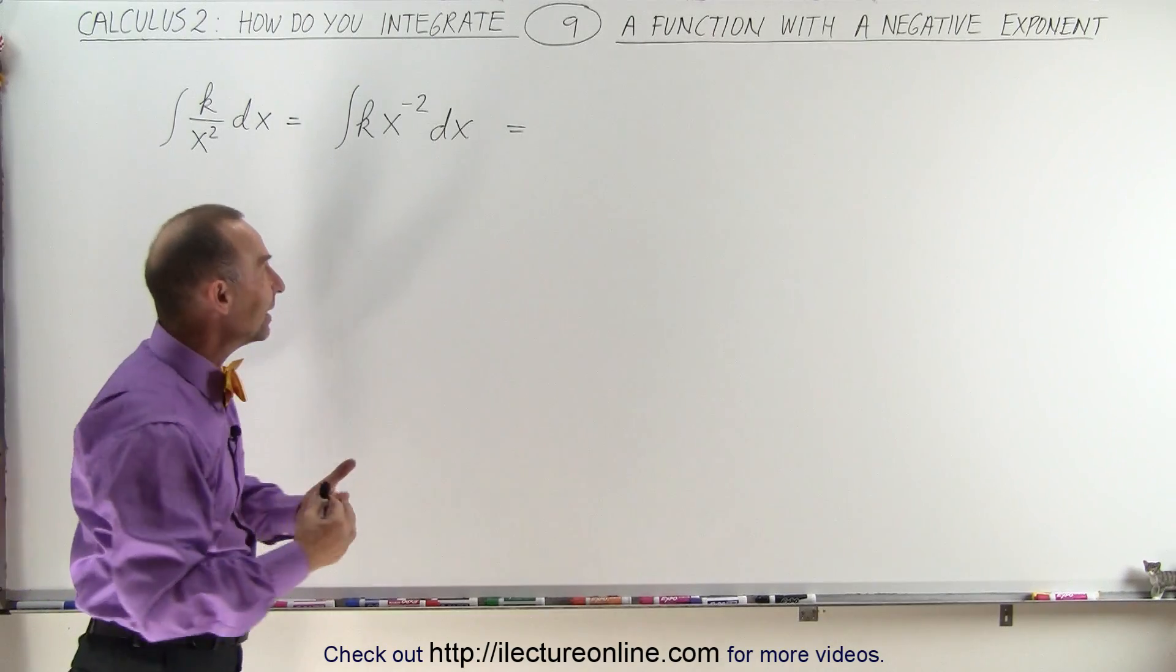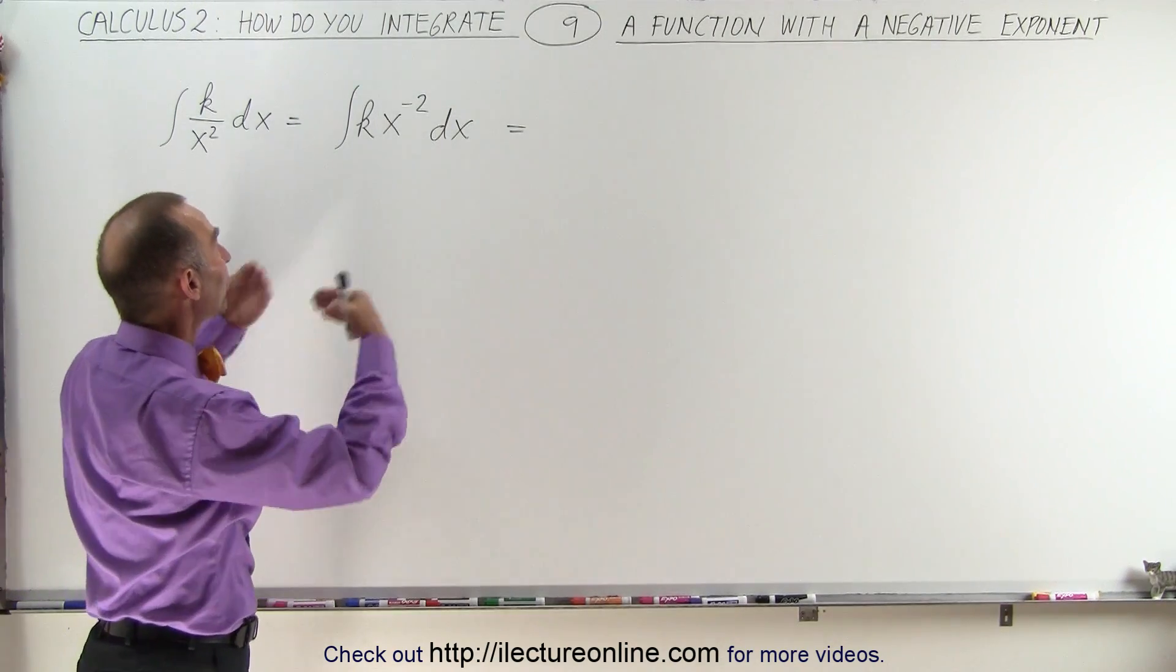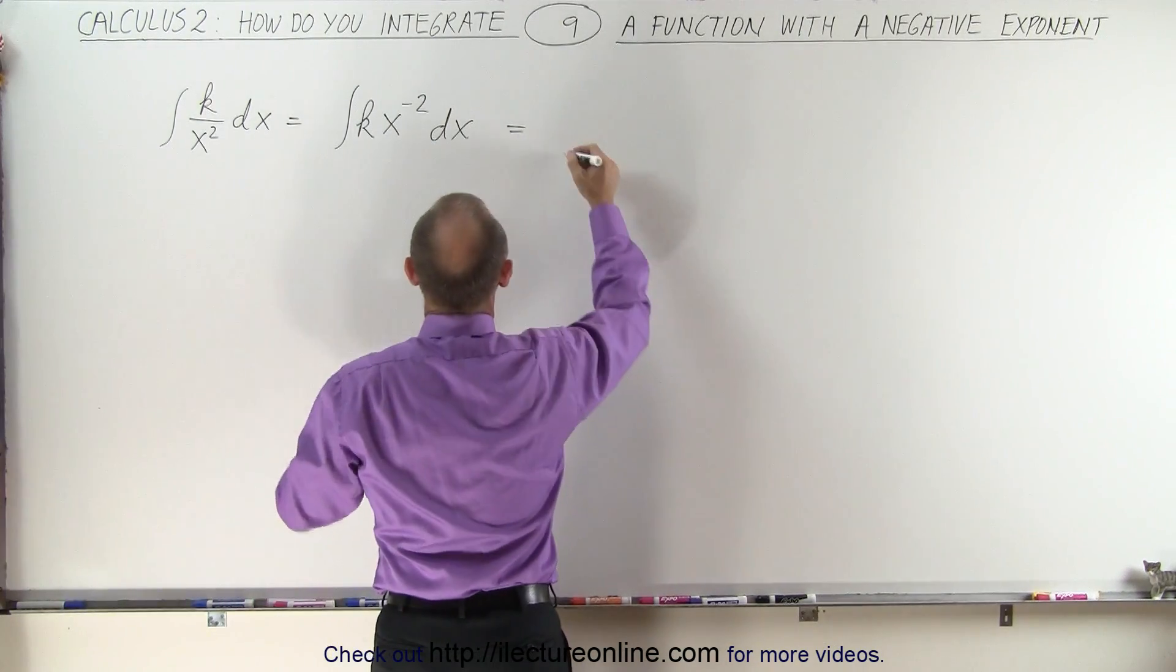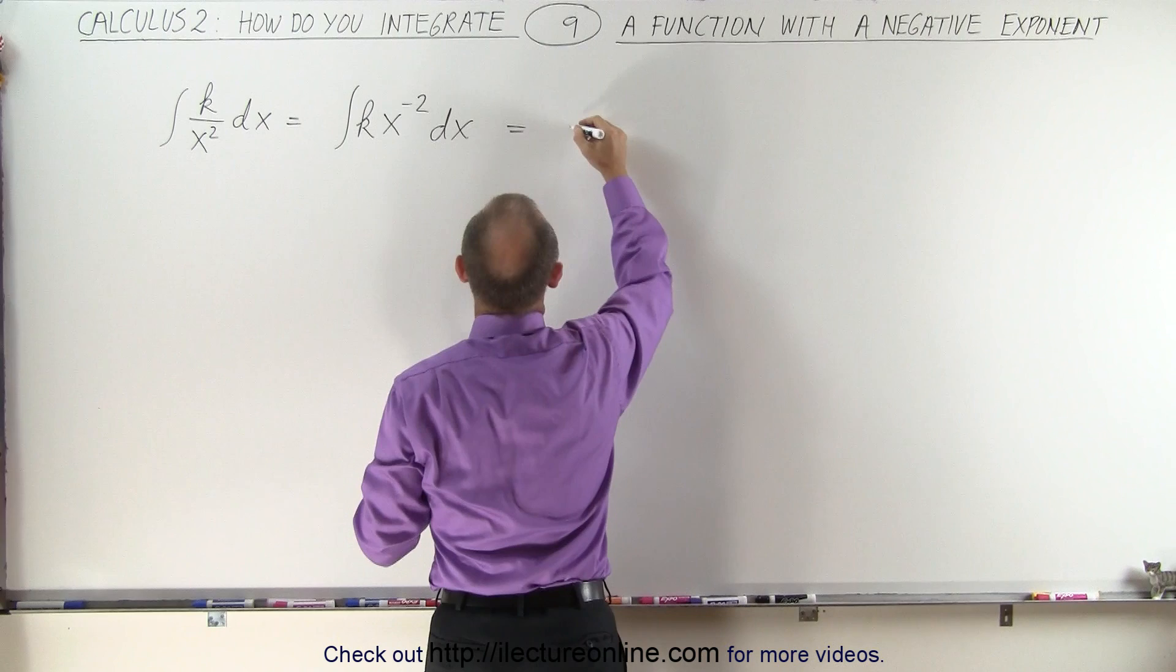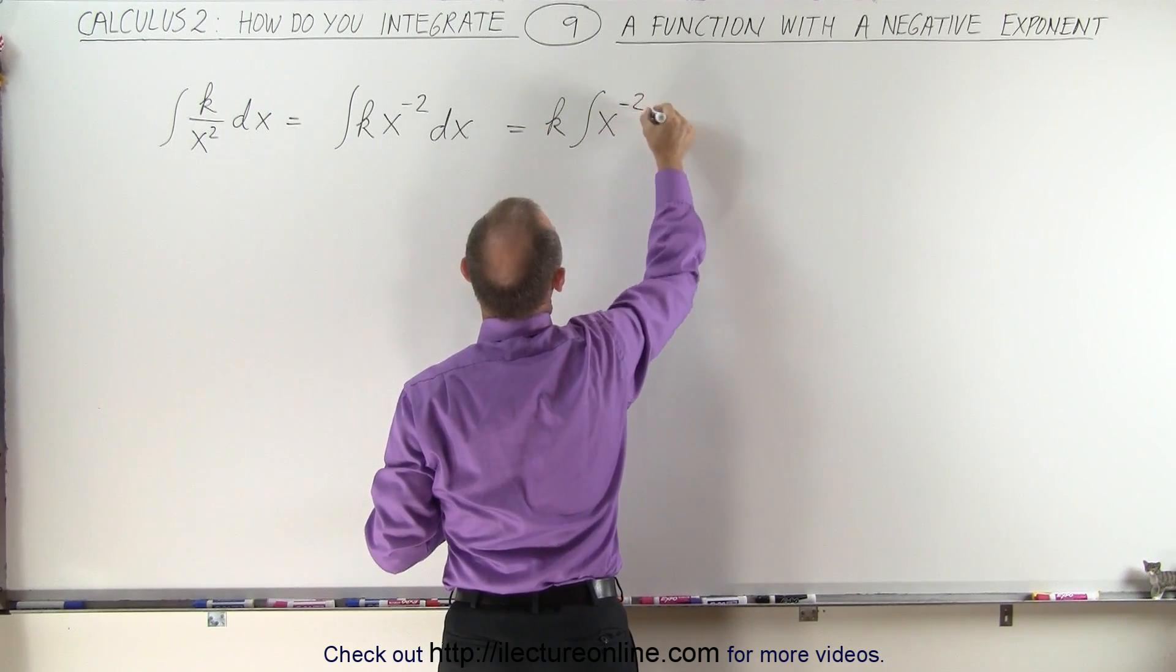The method is exactly the same as if we had a positive exponent. We simply add one to the exponent and divide by the new exponent. Of course, first we want to move the constant outside the integral sign. We end up with k times the integral of x to the minus 2 dx.